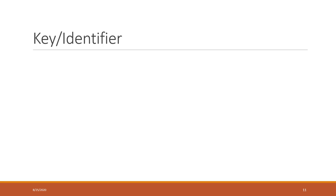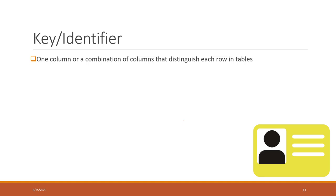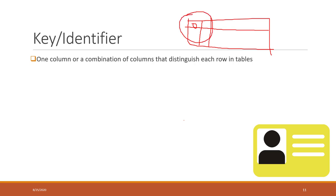That is another very important feature in relational databases. When we think about the primary identifier, that basically means that when you have a table in a relational database, you can have one column or a combination of multiple columns together that can distinguish each row in the table. For example, in the teacher's table, you can have the GMU email as a key to identify all the professors in the program.